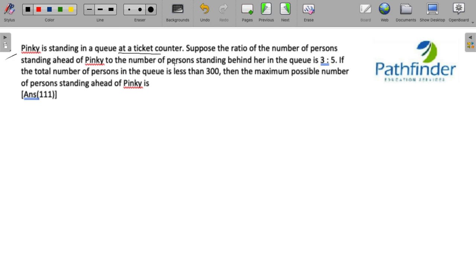Suppose the ratio of the number of persons standing ahead of Pinky to the number of persons standing behind her in the queue is 3 to 5, and the total number of persons in the queue is less than 300. Then find the maximum possible number of persons standing ahead of Pinky.